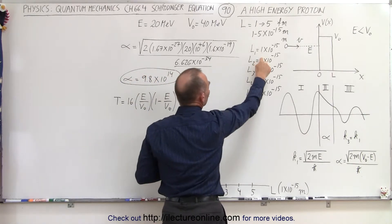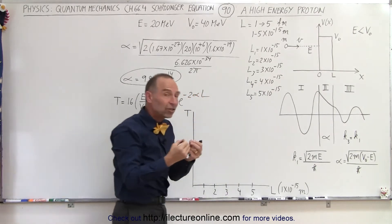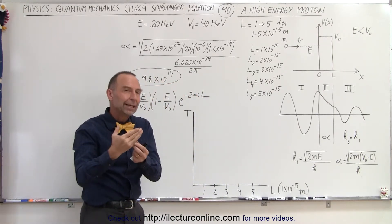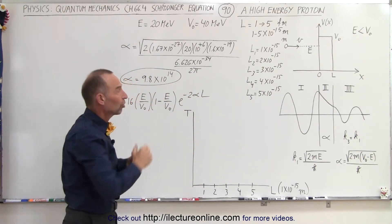And so we start with one, then we go to two, three, four, and five femtometers. And in each case, what is the probability that the proton will make it through such a barrier?